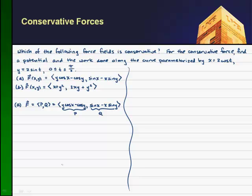The criterion that we've learned to check this is that the partial of p with respect to y should equal the partial of q with respect to x. I'll put a question mark above it because I'm not sure if they're equal to each other. So let's take the partial of p with respect to y.